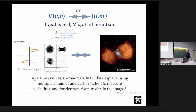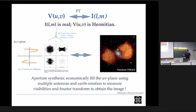At each of these points we have complex visibility - both amplitude and phase. Many of these visibilities come from the same antenna pair but lie at different locations in the UV plane because the projected baseline value has changed as the source moved in the sky. Aperture synthesis allows us to use the rotation of the Earth to economically fill this UV plane. Since I'm observing objects that are not changing during the observation, I can observe for 8 to 10 hours - from rise to set - filling the UV plane as much as possible using the antenna distribution I have.